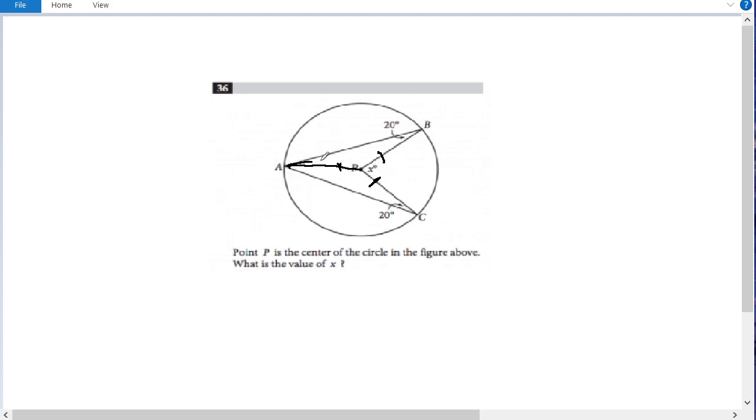Thus, we have these isosceles triangles. And what do we know about isosceles triangles? Well, we know that the angles opposite of equal sides are also equal. So if this angle measure is 20 degrees, then this angle measure also has to be 20 degrees.